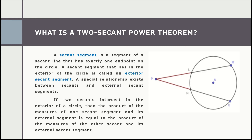Applying the two-secant power theorem: if two secants intersect in the exterior of a circle, then the product of the measures of one secant segment and its external segment equals the product of the measures of the other secant segment and its external secant segment. Our formula is: MP · LP = OP · NP.